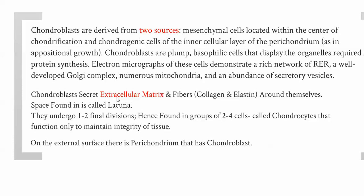The function of the chondroblast is to secrete extracellular matrix and fibers like collagen and elastin. When it secretes the extracellular matrix, it surrounds itself inside a lacuna, and the chondroblast inside a lacuna is called a chondrocyte. The chondrocyte can undergo one to two final divisions and is found in groups of two to four cells called isogenous groups. The function of the chondrocyte is to maintain the integrity of the tissue — unlike the chondroblast, which actively secretes matrix.